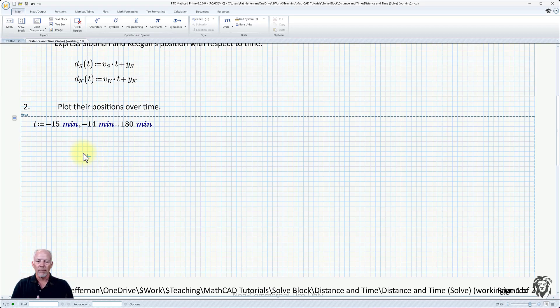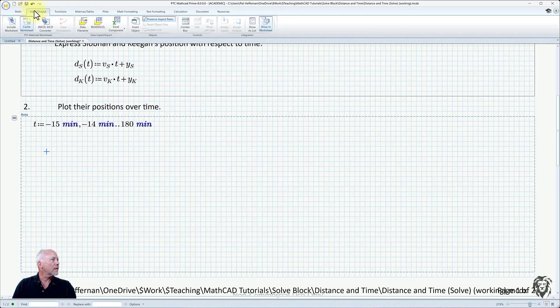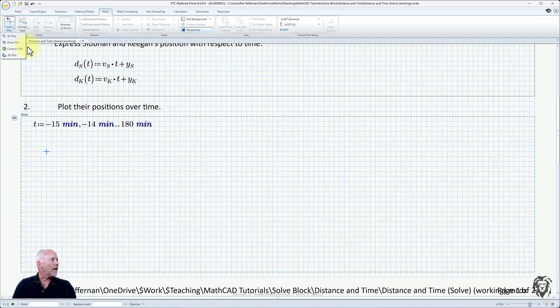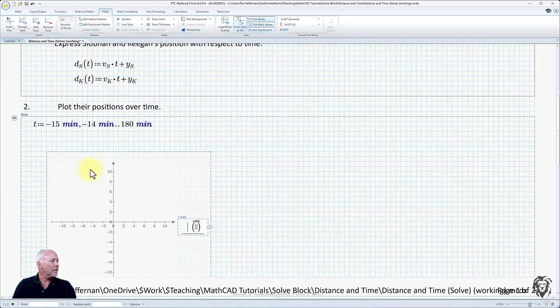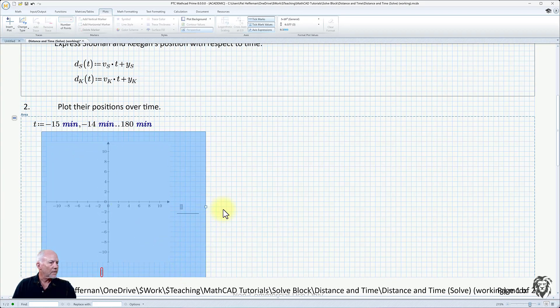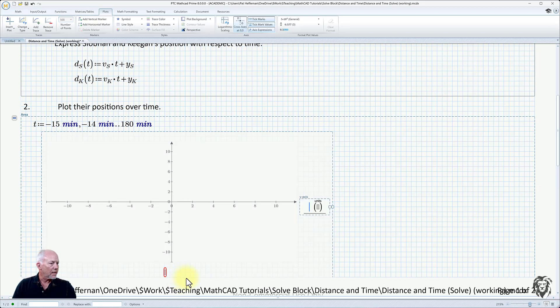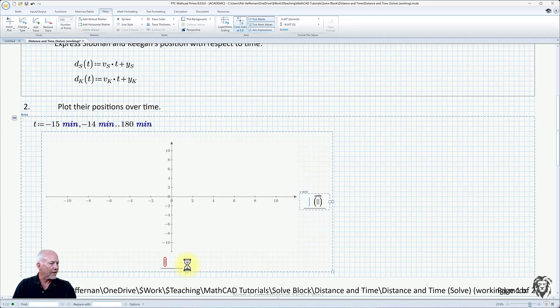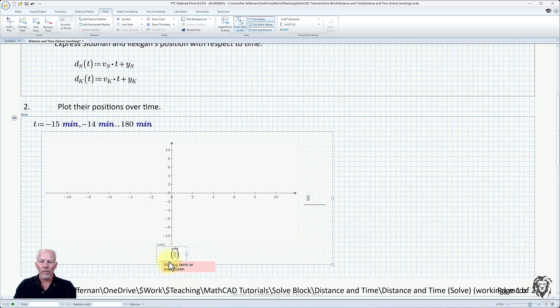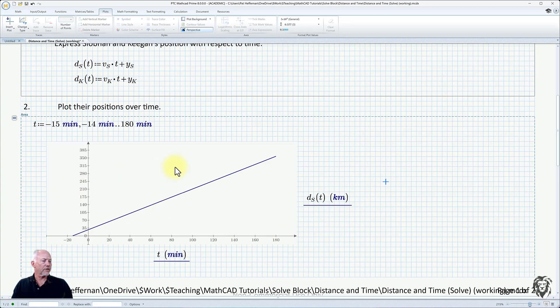With t defined, now I should be able to plot both Siobhan's position and Keegan's position as a function of time. Going to plots, insert plot. It's going to be an x-y plot. This is going to be plotted over time. The units we want here is minutes. Now we're going to do d_s, it's a function of time. The units there is going to be in kilometers. If we click outside, we should get Siobhan's position as a function of time.